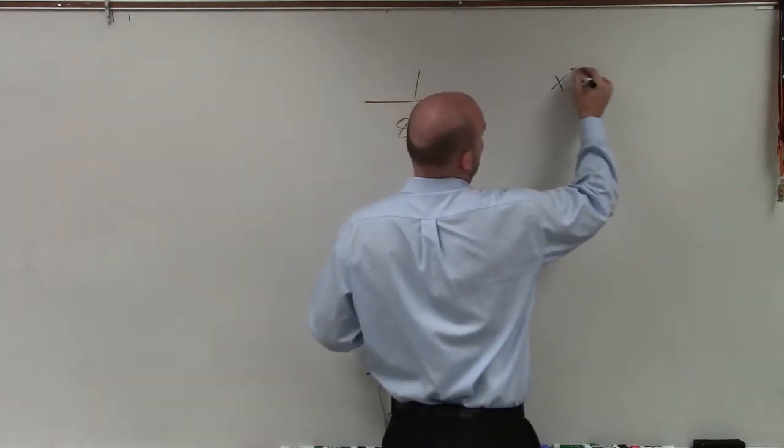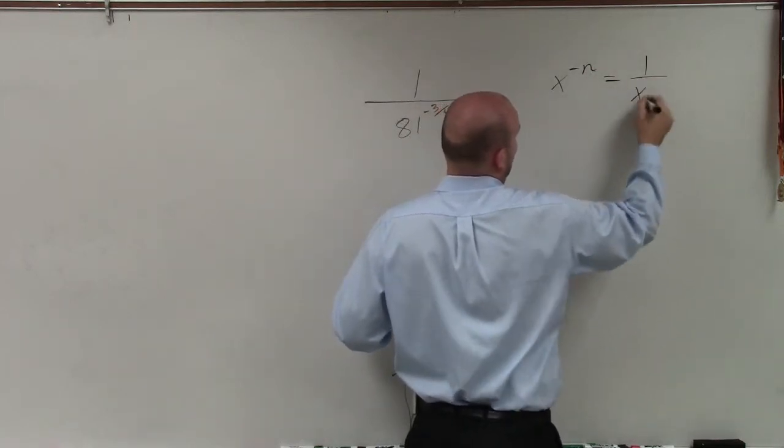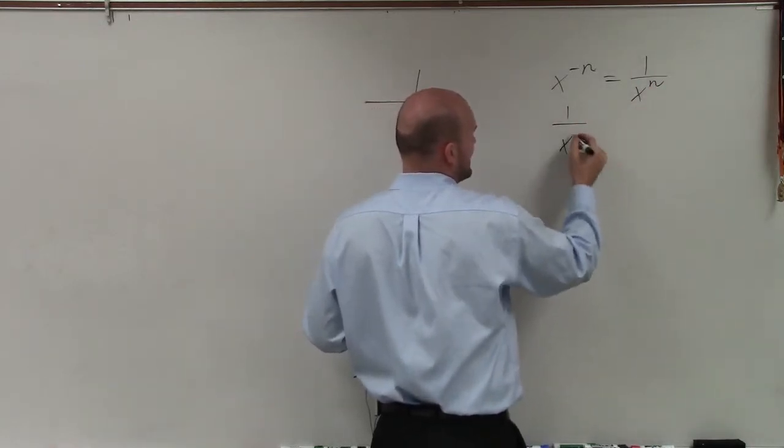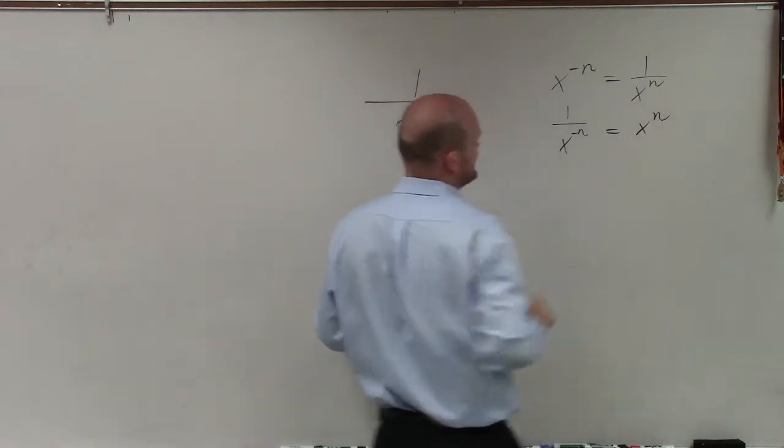Remember rules of exponents. If we have x to the negative n, then to rewrite that as a positive exponent, we write that as 1 over x to the n. Similarly, if I have 1 over x to the negative n, to rewrite that as a positive exponent, I write that as x to the n.